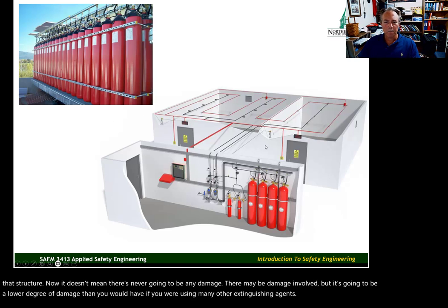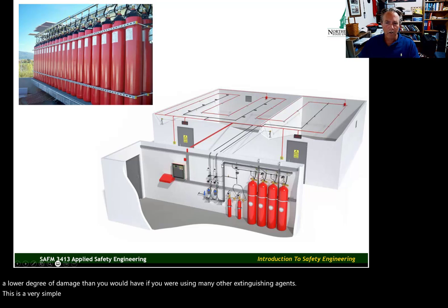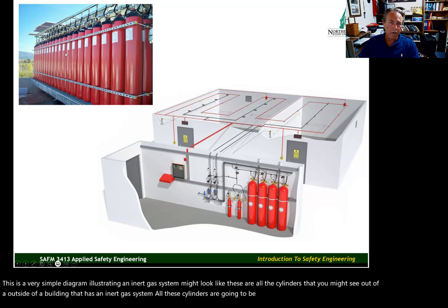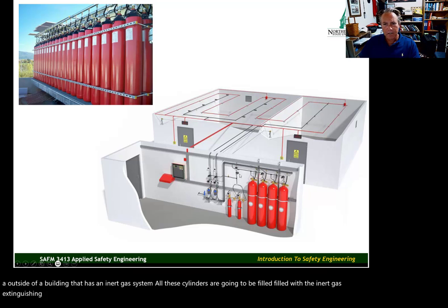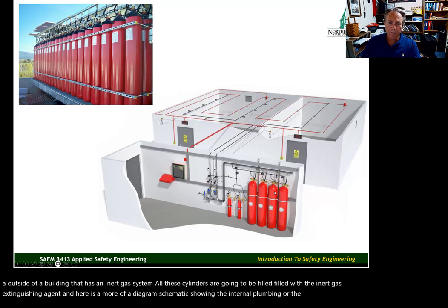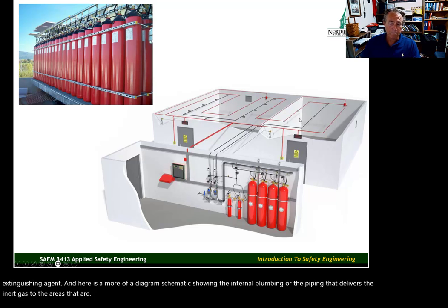Here is a simple diagram illustrating what an inert gas system might look like — these are the cylinders outside a building filled with the inert gas extinguishing agent, along with a schematic showing the internal piping that delivers the inert gas to the protected areas.